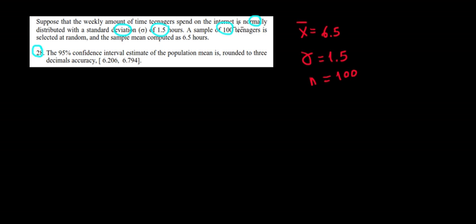A sample of 100 teenagers is selected at random and the sample mean is 6.5 hours. What's going to be the 95% confidence interval?